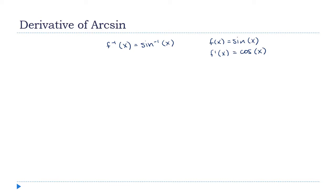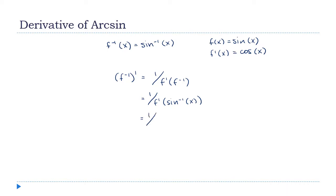Now let's use our formula. f inverse prime is 1 over f prime of f inverse, so that's 1 over f prime of the inverse sine of x, which gives us 1 over the cosine of the inverse sine of x. That's not a very pretty formula, so we're not going to stop there.